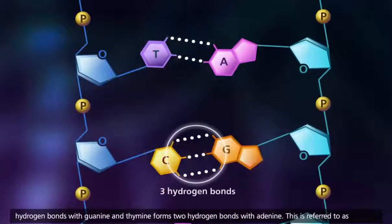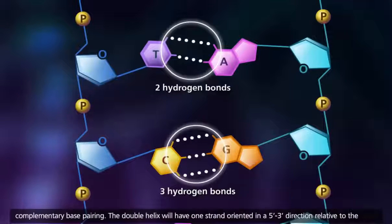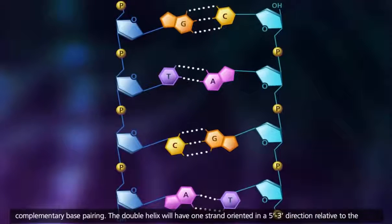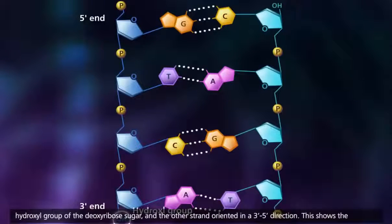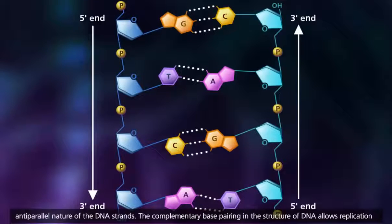Cytosine forms three hydrogen bonds with guanine, and thymine forms two hydrogen bonds with adenine. This is referred to as complementary base pairing. The double helix will have one strand oriented in a 5' to 3' direction relative to the hydroxyl group of the deoxyribose sugar, and the other strand oriented in a 3' to 5' direction. This shows the anti-parallel nature of the DNA strands.